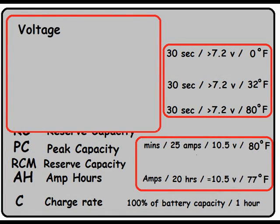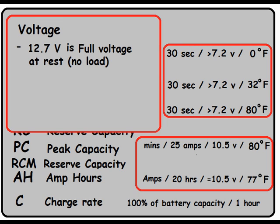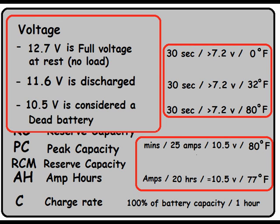Let's move on to voltage. A fully charged battery with no load is 12.7 volts. 11.6 volts is considered discharged, and 10.5 is considered a dead battery. Go ahead and ask, I know you want to because I did. What the heck's the difference between a dead battery and a discharged battery?